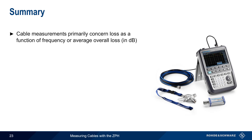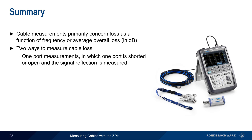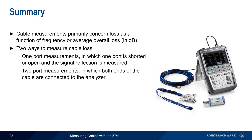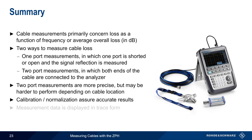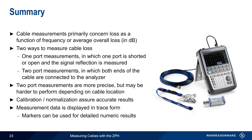Let's end with a brief summary. Cable measurement is primarily concerned with the loss of a cable as a function of frequency and/or the average overall loss in a given cable. There are two ways to measure cable loss. The first is one-port measurements, in which one end of the cable is shorted or open, and the resulting reflection is measured by the ZPH. The other method is two-port measurements, also called transmission measurements. These are more precise and may be necessary if cable loss is very high, but they can be difficult to perform on installed cables. Calibration or normalization is also needed to obtain accurate measurement results. Cable loss measurements are usually displayed in the form of a loss versus frequency plot, and markers are helpful in obtaining detailed numeric results. This concludes our presentation, Measuring Cables with a ZPH. If you'd like more information about network measurements, cable measurements, or spectrum and network analyzers from Rohde & Schwarz, please see the links in the video description. Thank you for watching.